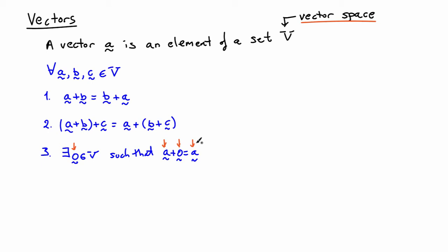That's the standard meaning of zero as you're used to it. The last property is that there must be an inverse element in the set V — for every vector a, there exists a vector minus a such that if you add a to minus a, you get back the zero element. Those are the basic properties of a vector space — a pretty abstract definition, but that's what's required mathematically.